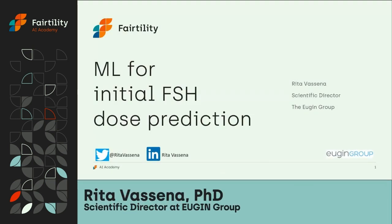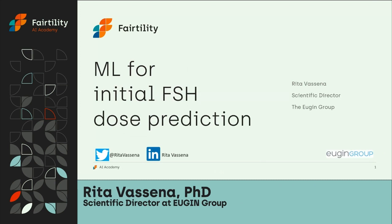Hello, everyone. My name is Rita Vecina. Today I'm going to talk about the use of artificial intelligence, and specifically machine learning, in order to predict the best initial dose of FSH for controlled ovarian hyperstimulation.